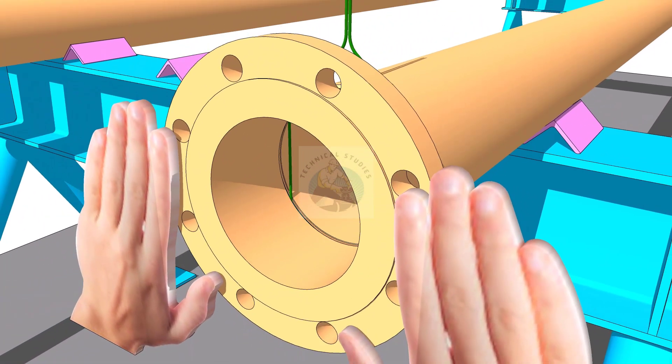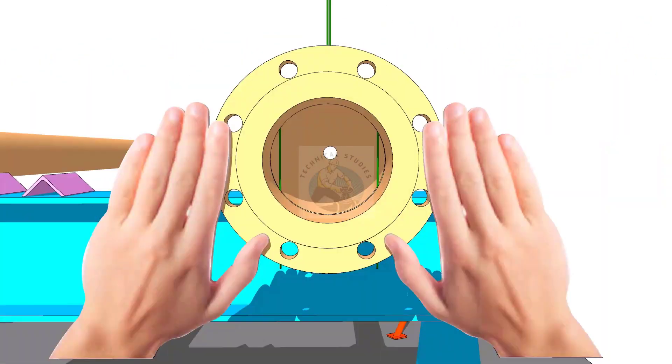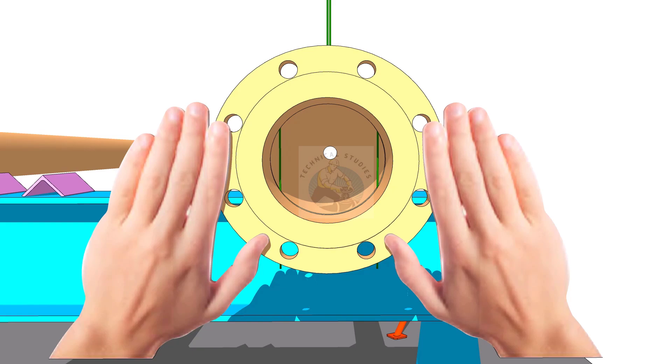Hold the flange on the pipe face firmly or by using clamps. Make sure the inner face of the pipe and the flange are not overlapping.